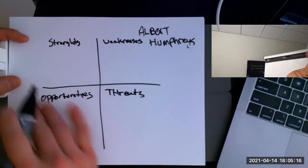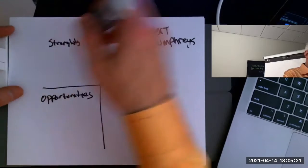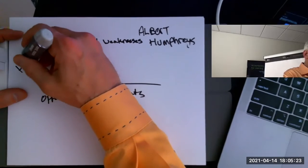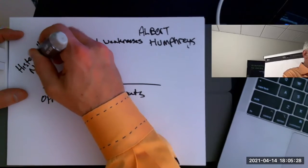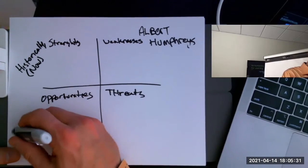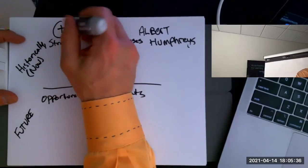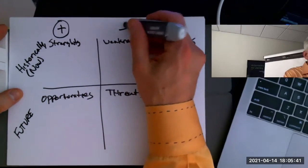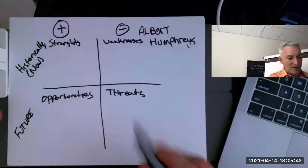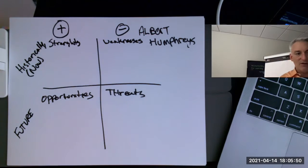It's a two-by-two: across the top you have 'now' — historically, how are we positioned — and then the future — where are we going? On the left side you have positives, things that we're good at, things that we're known for. On the right you have the negatives — the things that keep us up at night, things that we're not so good at. Albert used this as a strategy planning tool and I think it's a very, very useful tool.